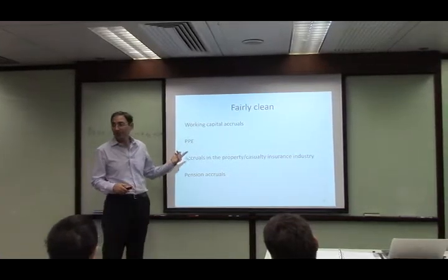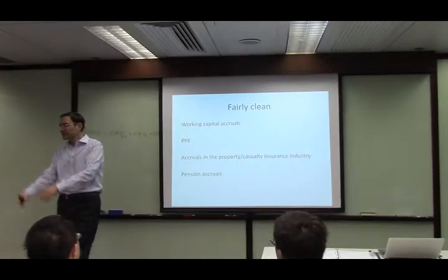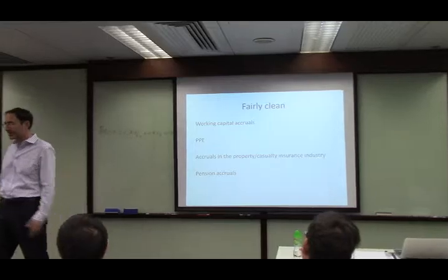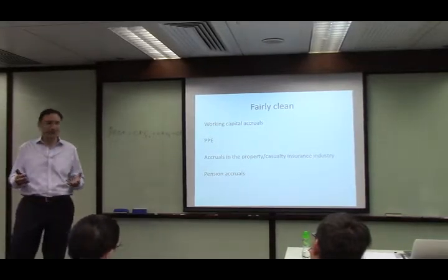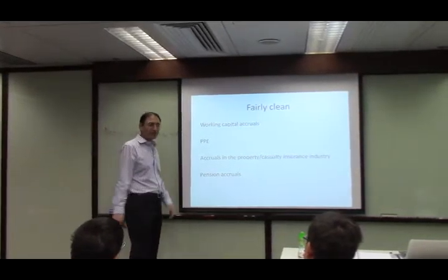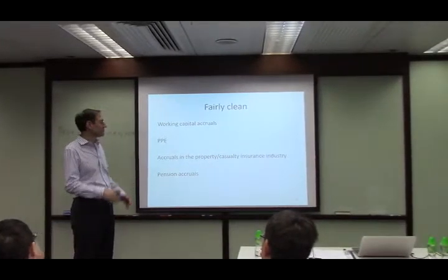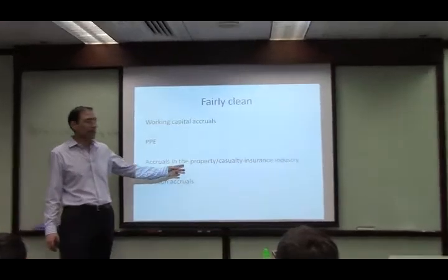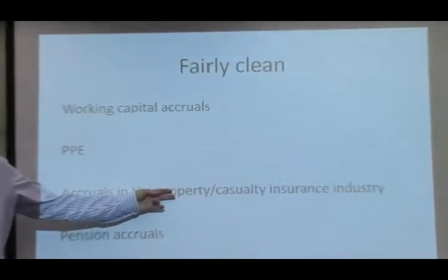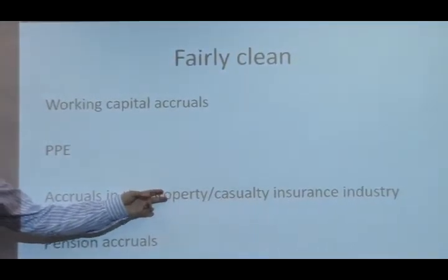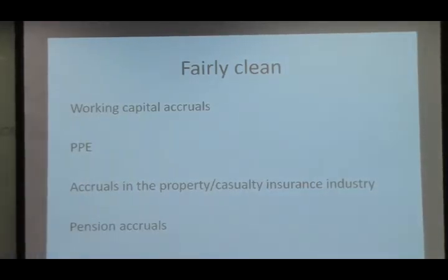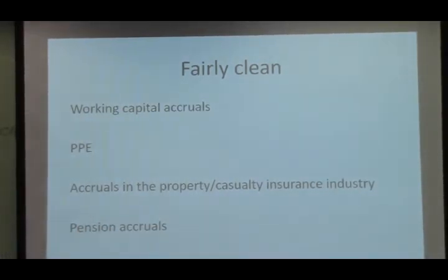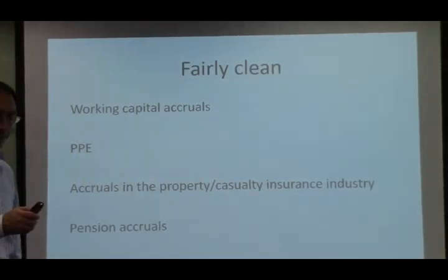For working capital accruals, days receivable outstanding is the duration of accounts receivable, and days inventory outstanding is the duration of inventory. These existing intuitions provide a nice way to organize them. In the property casualty industry, the cash flows for the main accruals are disclosed, so you can do it there. On pension accruals, you can do it somewhat. Anytime you have a clear identification, this works well.